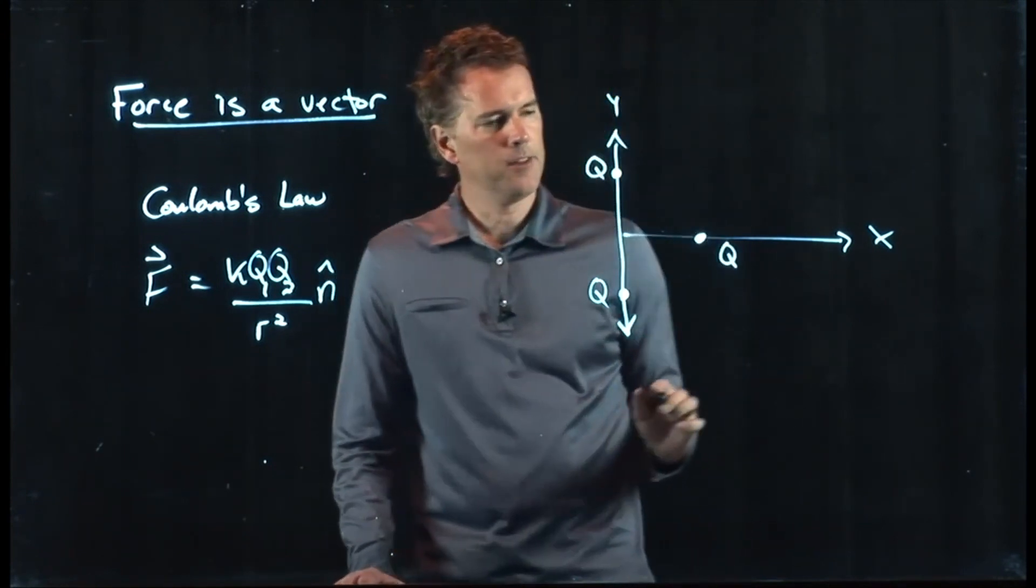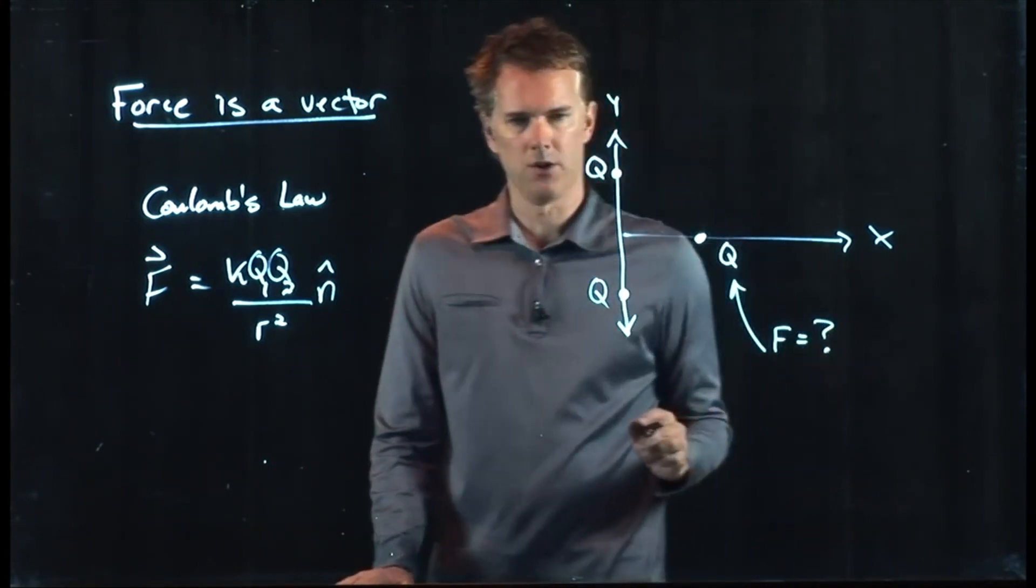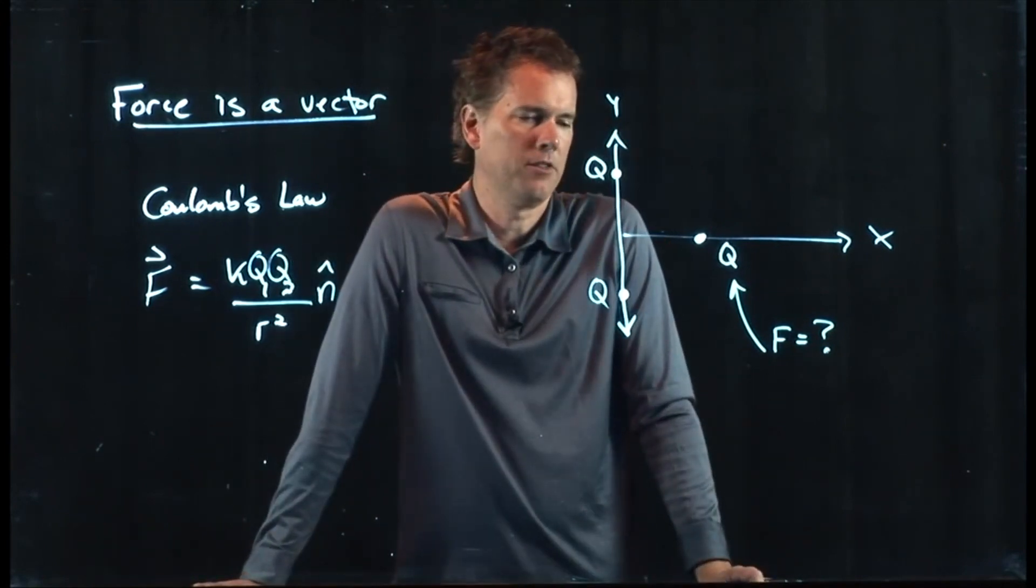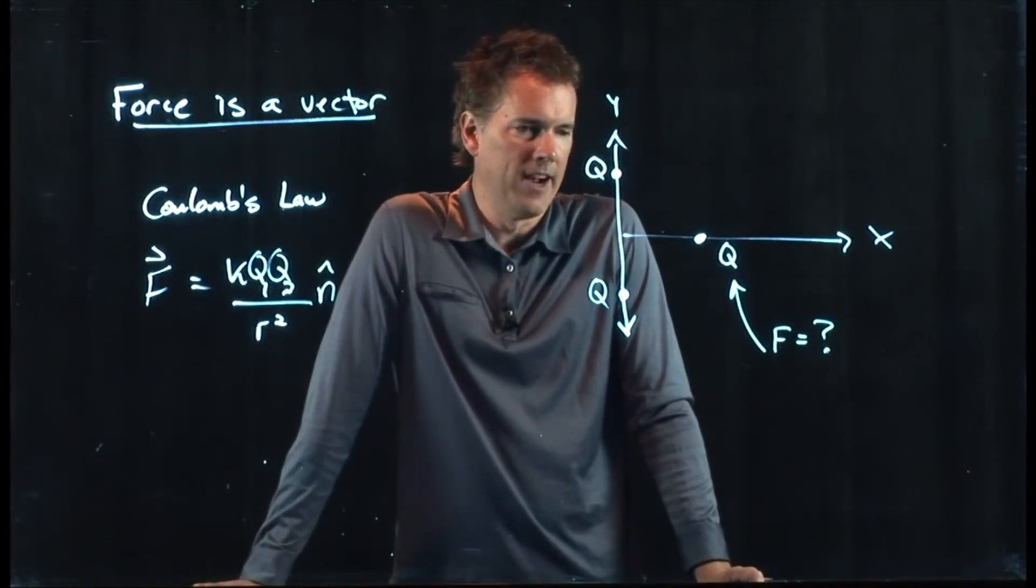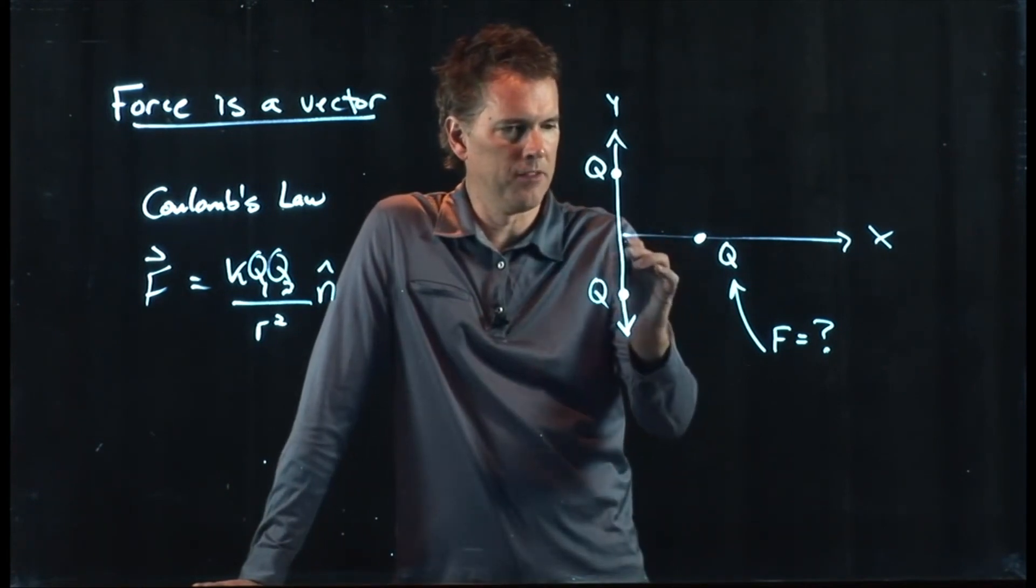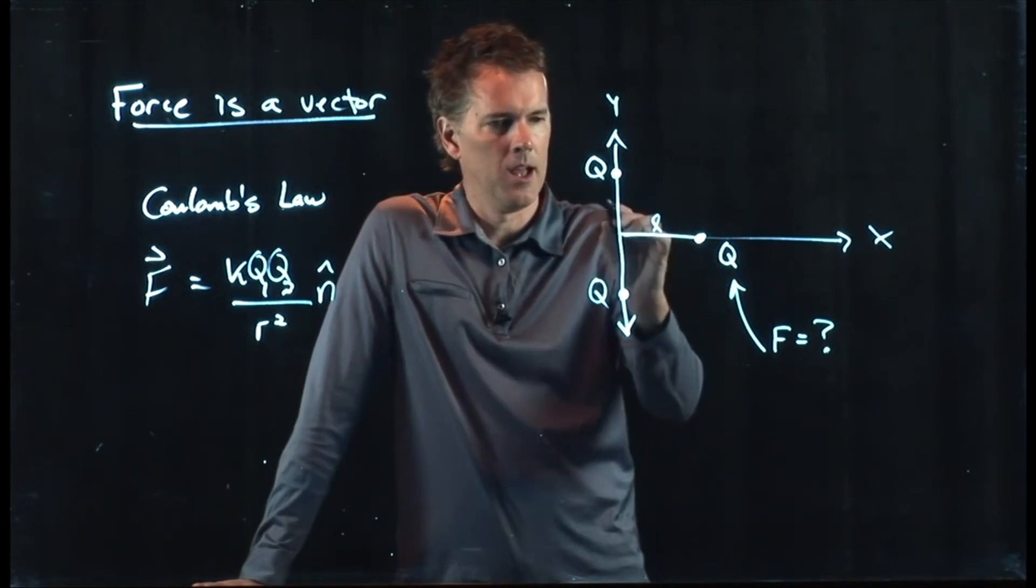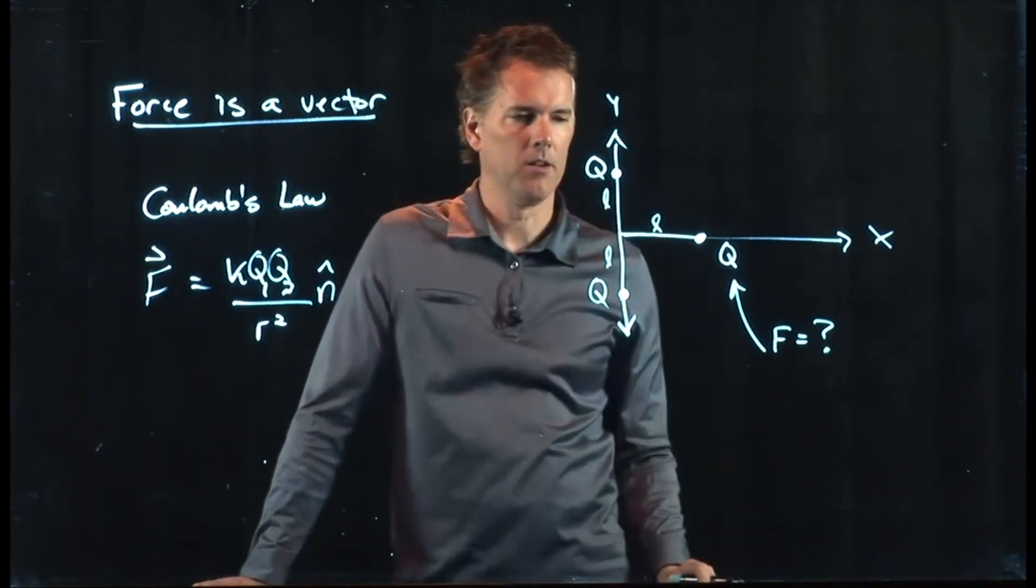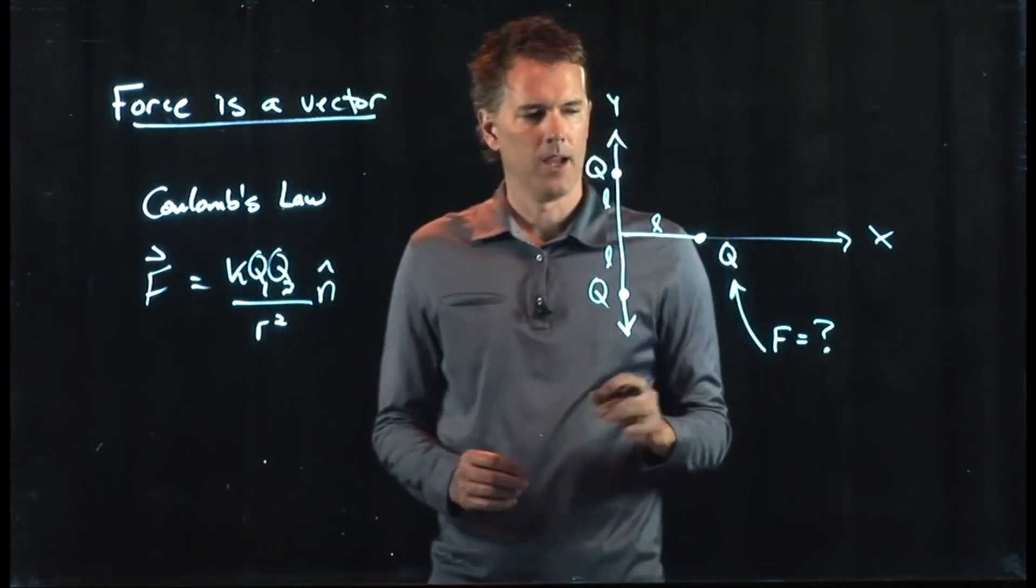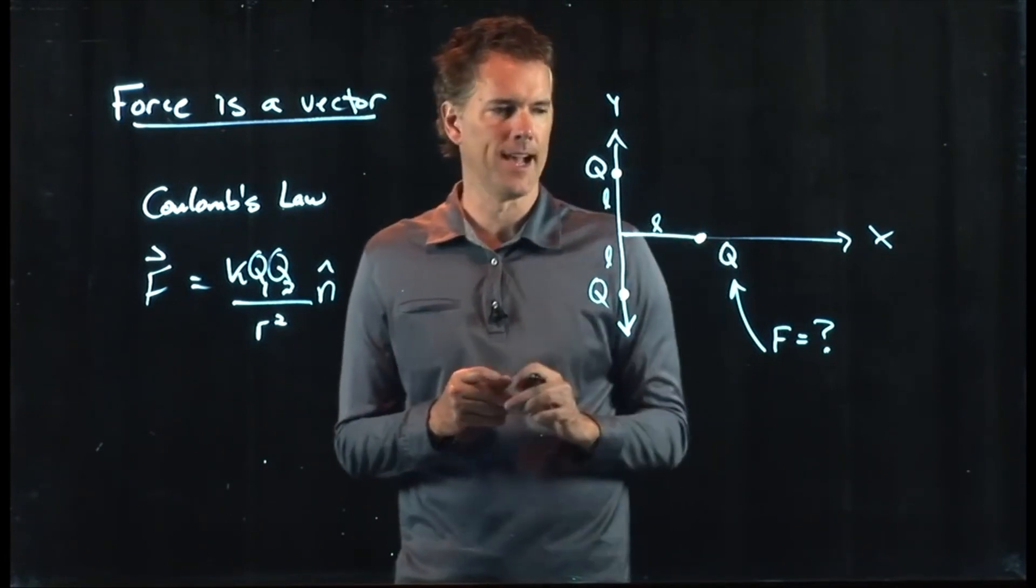And then we'll put a third charge out here equal distance away. And let's see if we can find the force on this charge due to the other two. Very straightforward vector problem. Now let's give some dimensions here. We'll say that this distance here is L and we will call that distance L and that distance L. So everything is L away from the origin.